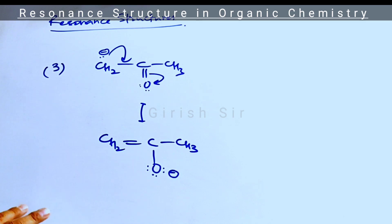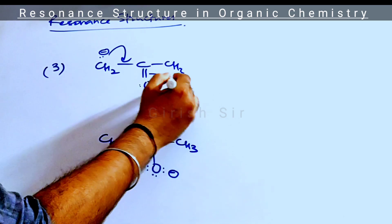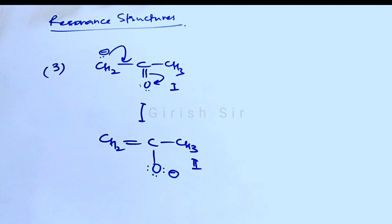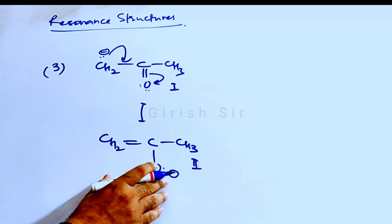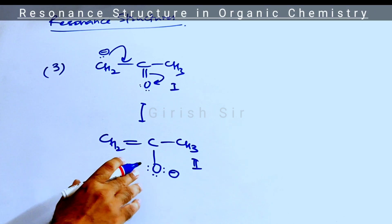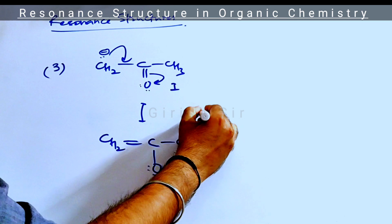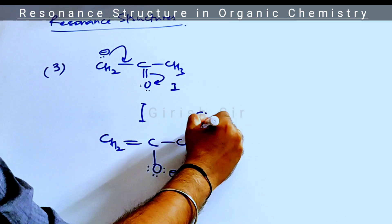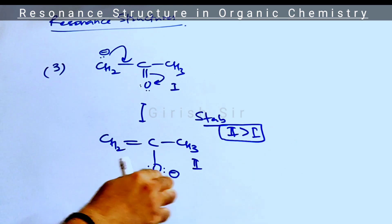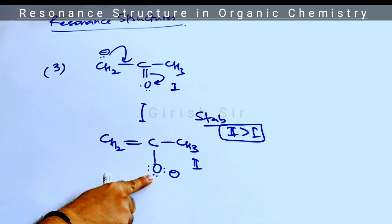These two structures are not identical. In structure one, you have a negative charge appearing on carbon, and in structure two you have the negative charge on the oxygen atom. Because oxygen is more electronegative than carbon, we expect the second structure — where the negative charge is on the more electronegative oxygen — to be more stable. So structure two is more stable than structure one.